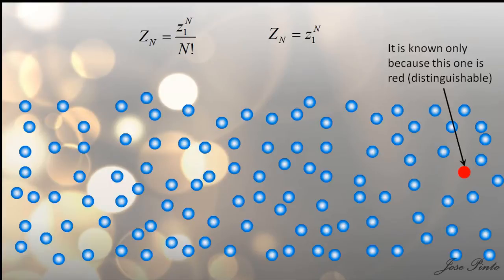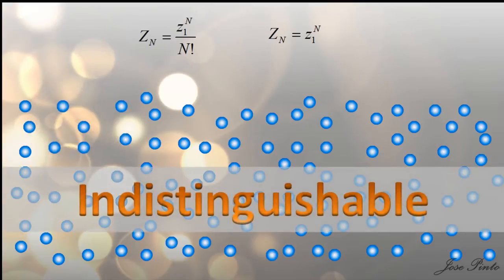And by the way, the only reason you can tell the difference is because this one I painted in color red. But can you tell me, let's say about this one? Or that one? What about this one right here? And that one? Just like the cars in the city, you cannot tell the difference. This system is indistinguishable.